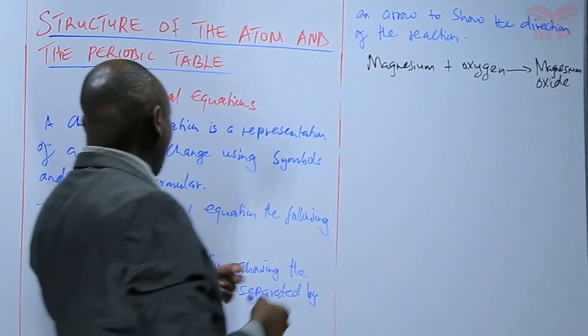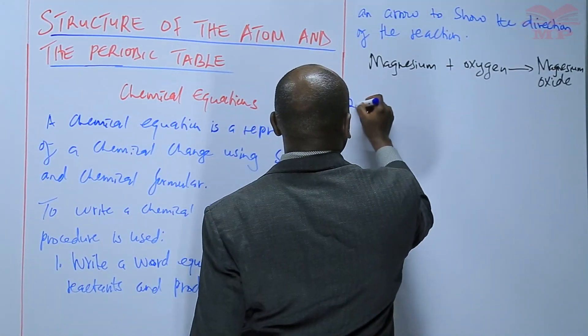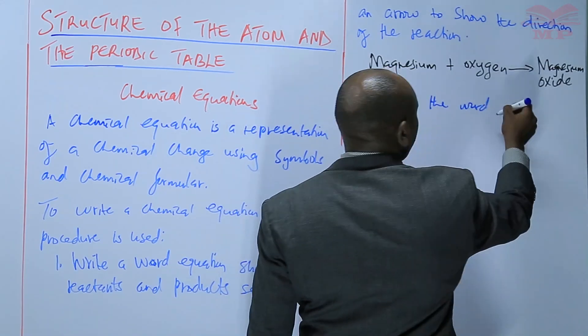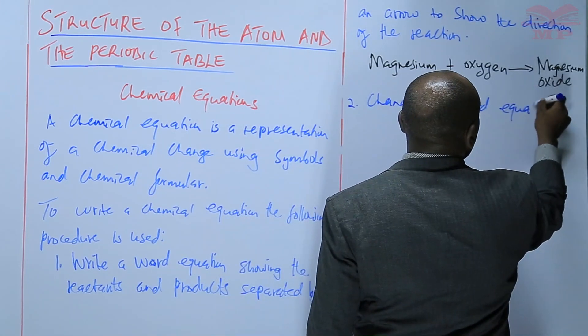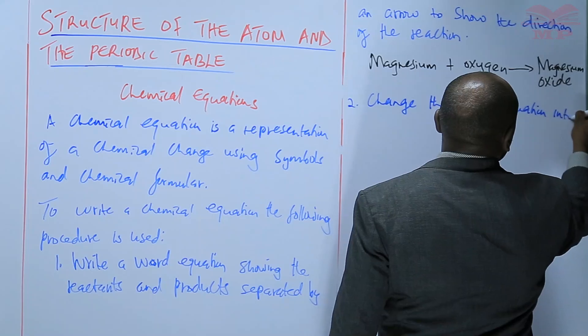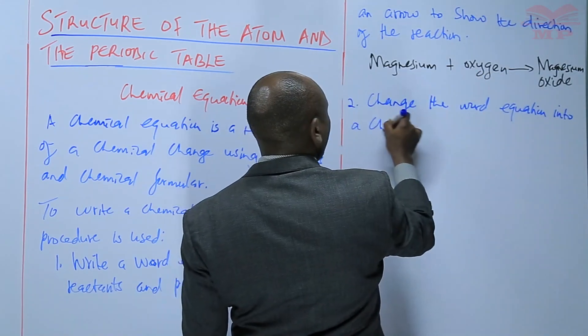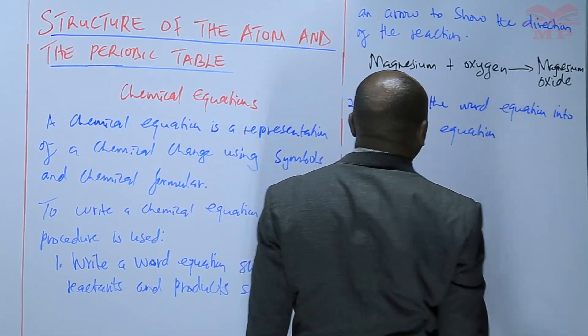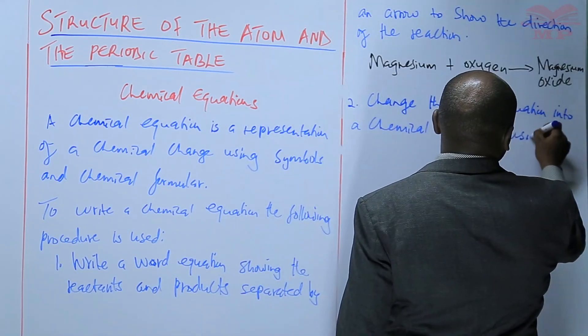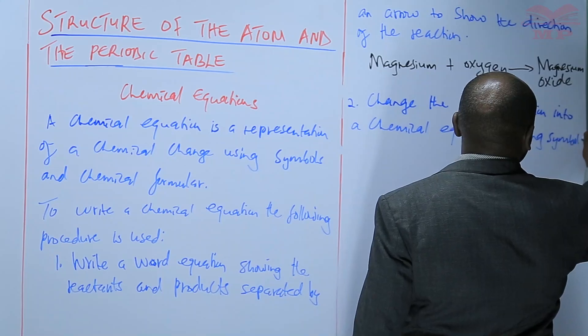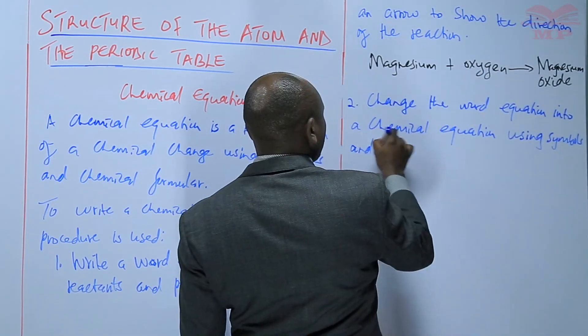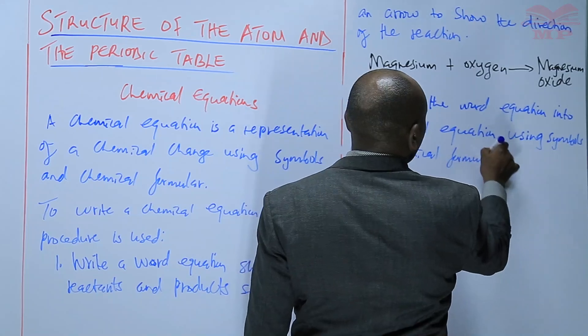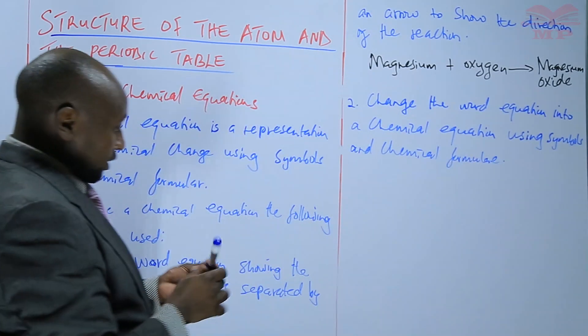Then the second step: change the word equation into a chemical equation using symbols and chemical formulas. For example, the case above.